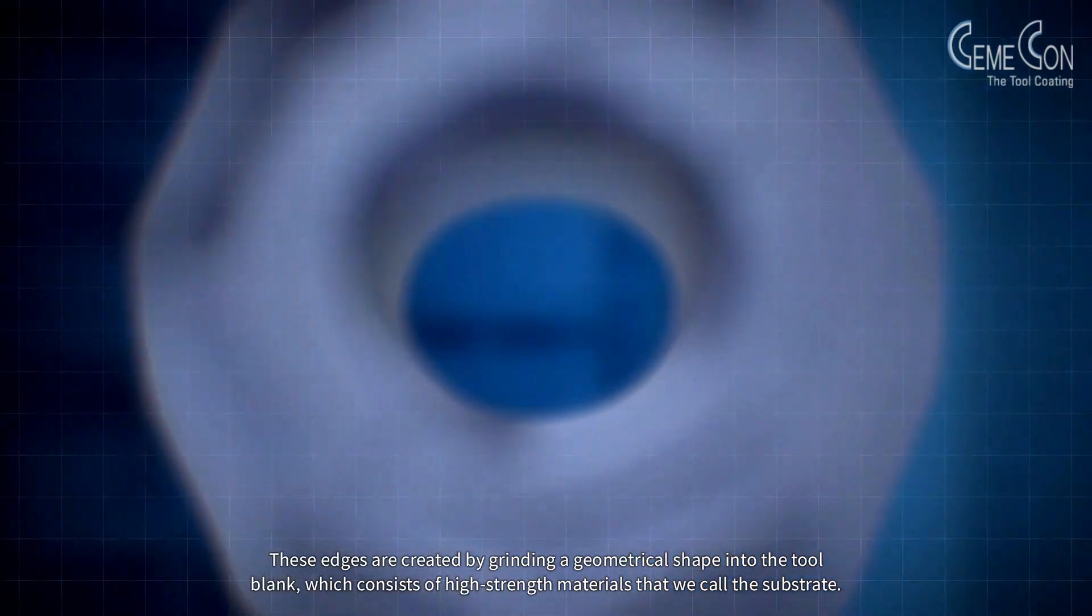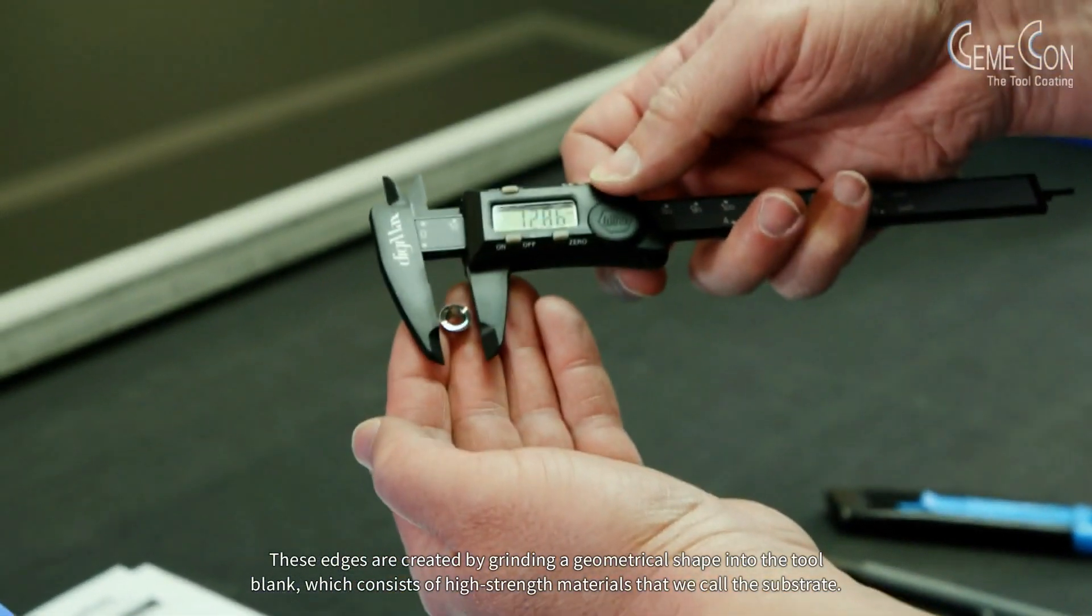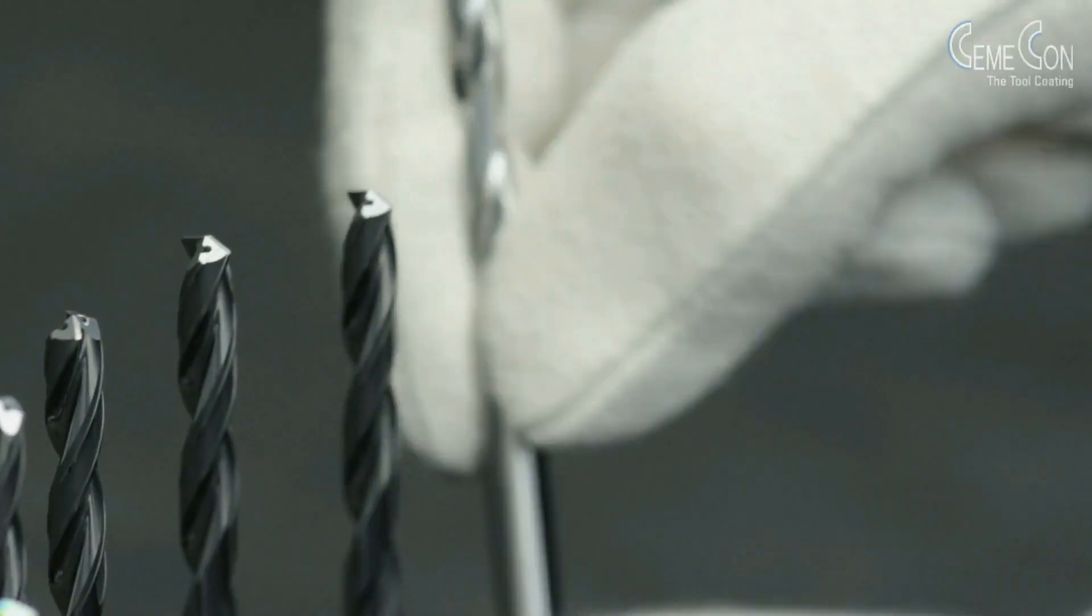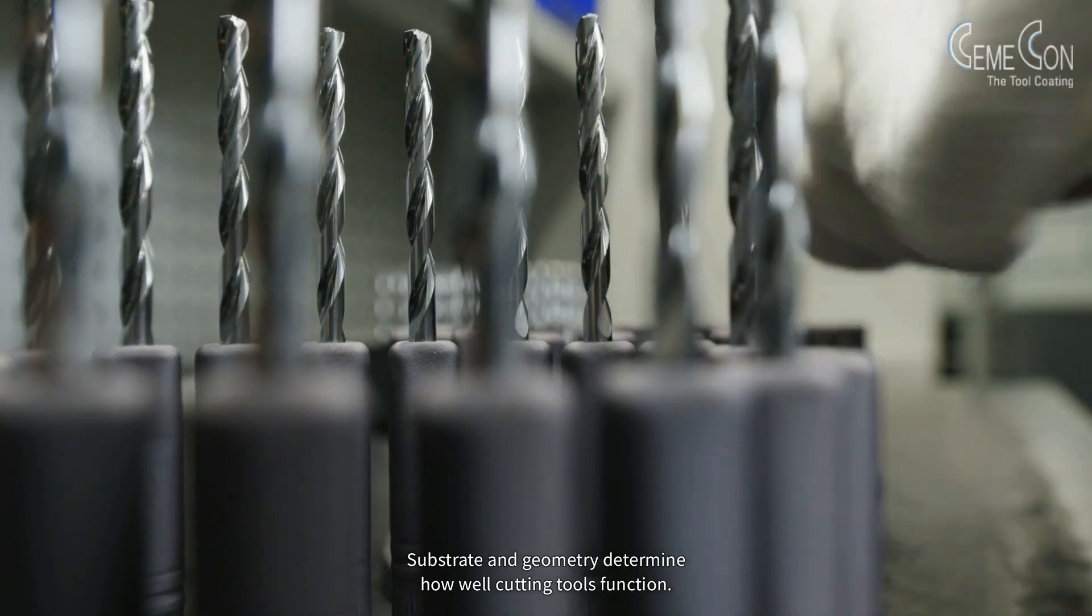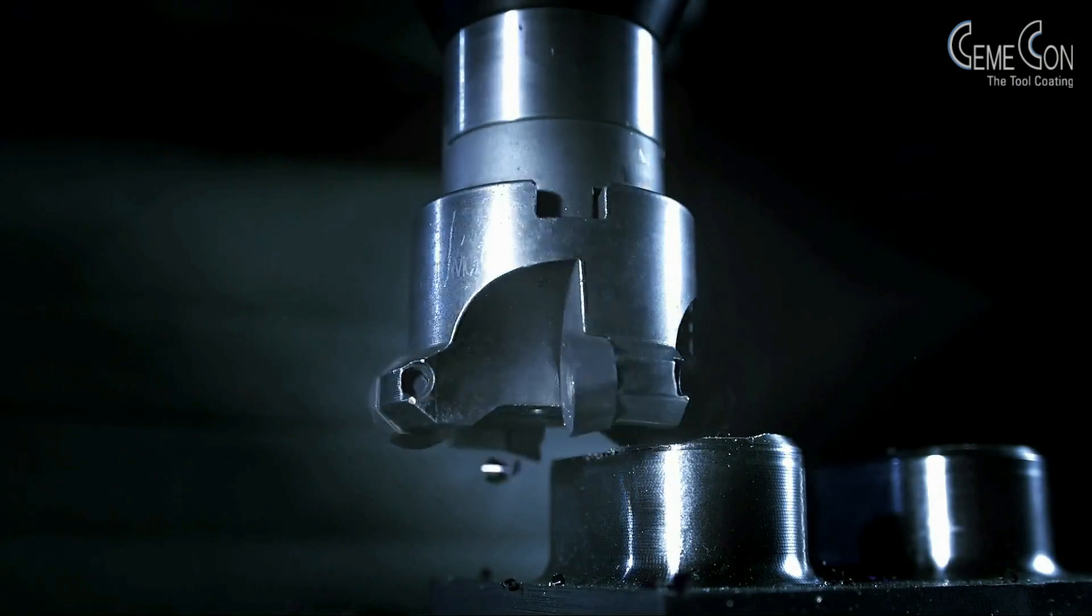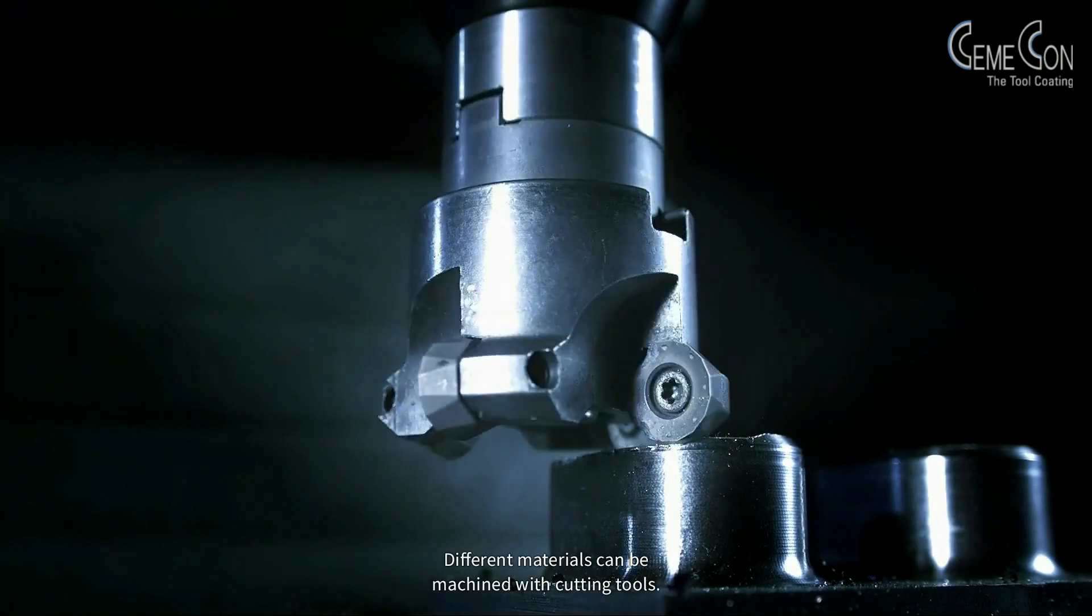These edges are created by grinding a geometrical shape into the tool blank, which consists of high-strength materials that we call the substrate. Substrate and geometry determine how well cutting tools function.